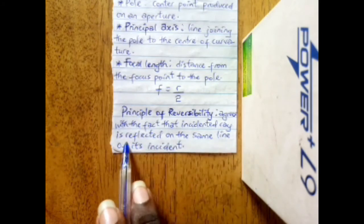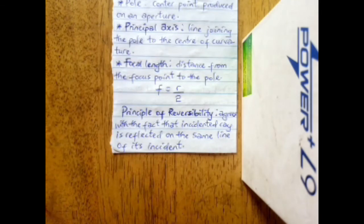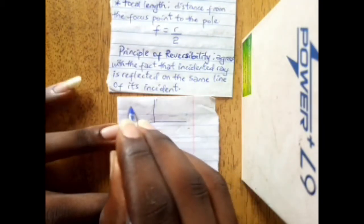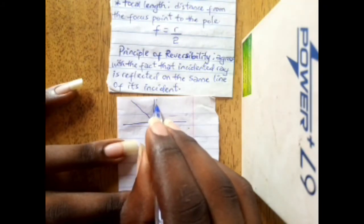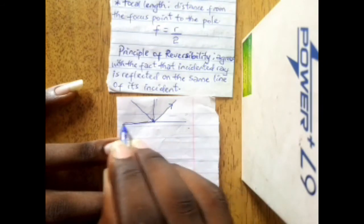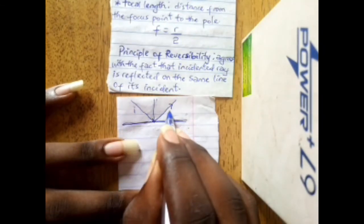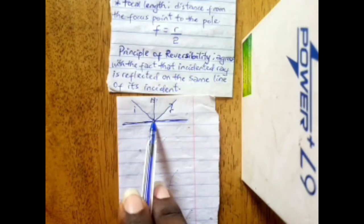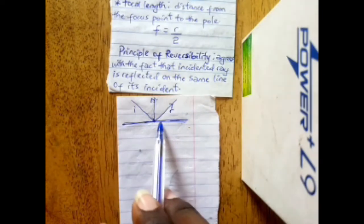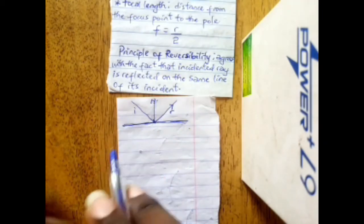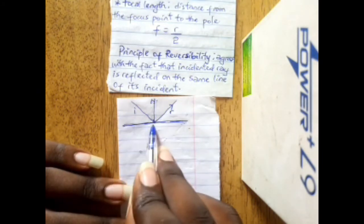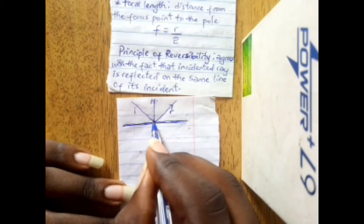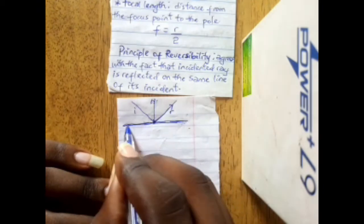The principle of reversibility agrees with the fact that an incident ray is reflected on the same line of its incidence. This confirms the law of reflection, which states that the incident ray, the normal, and the reflected ray all lie on the same plane. It is true for every surface.